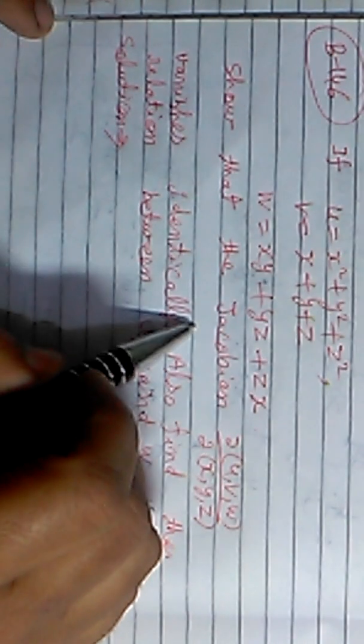Also find the relation between u, v, and w. We will keep the values of u, v, w in terms of x, y, z and compute the Jacobian of u, v, w with respect to x, y, z.